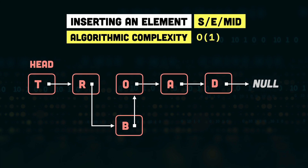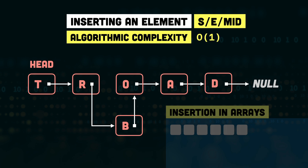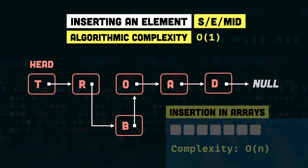If you remember inserting elements into an array — say we need to insert a new element at the second place — we need to push all elements one index ahead to make room, and then place the new element. The algorithmic complexity of this operation in arrays is linear, O(n). Compared to the O(1) complexity of insertion in linked lists, you can see that insertions in linked lists are much, much faster.